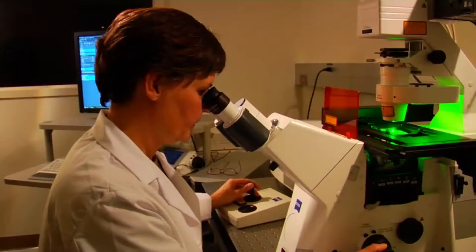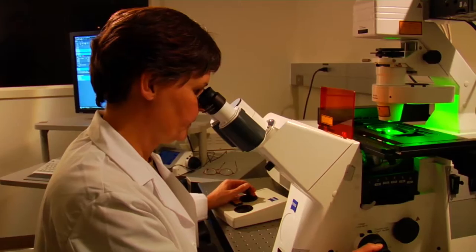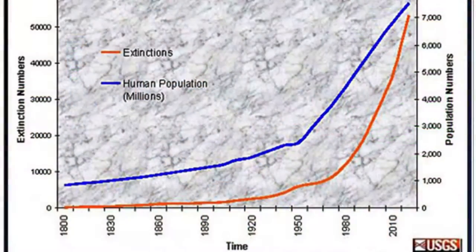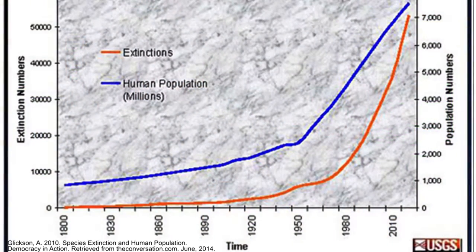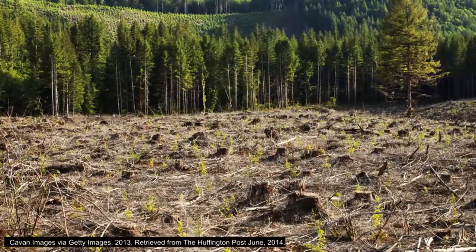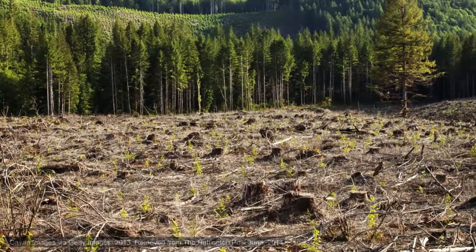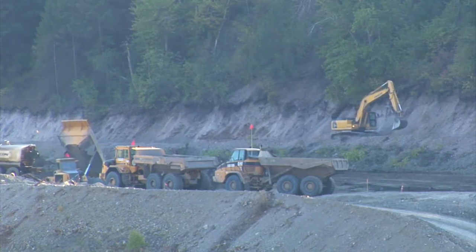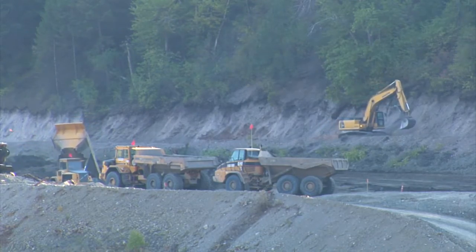Yet many scientists today believe that we are facing a mass extinction, somewhere between 100 and 1,000 species per year. So what brought about this new trend? Well, we humans are one of the main drivers that have drastically altered the landscape and natural balances, resulting in anthropogenic impacts on global climate change.